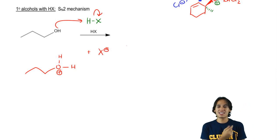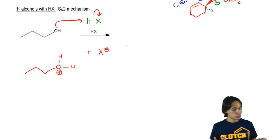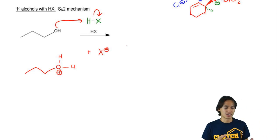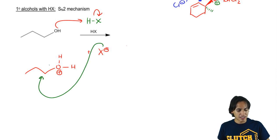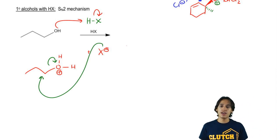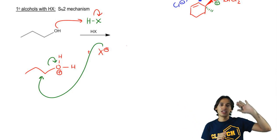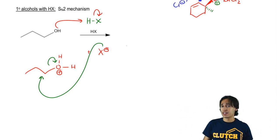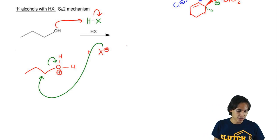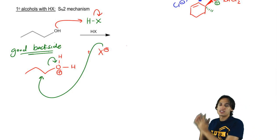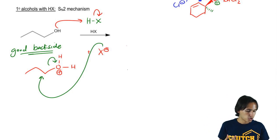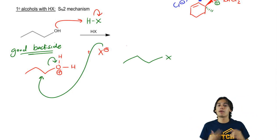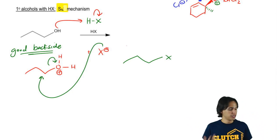But the problem is that this can't just leave and make a stable carbocation. So instead what we're going to do is we're going to do a straight up backside attack where the X hits the backside and kicks out the water. Now the reason this is possible here but it wasn't possible with the other situation is because the primary alcohol has a much better backside. Since it has a good backside, it's easy for my X to just kick out the water all in one step. So what we're going to get here is an alkyl halide once again. But in this case, my mechanism was different. I used SN2 instead of SN1.